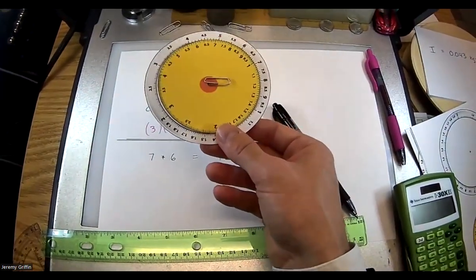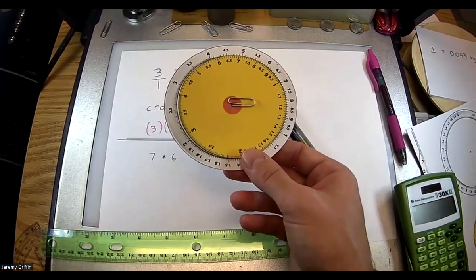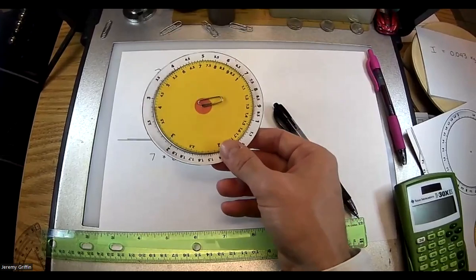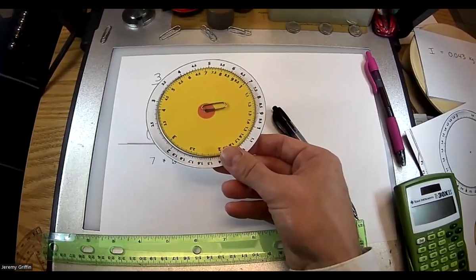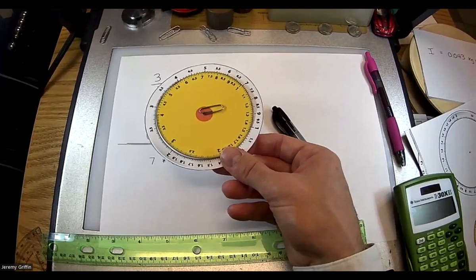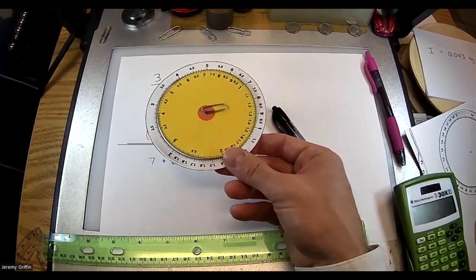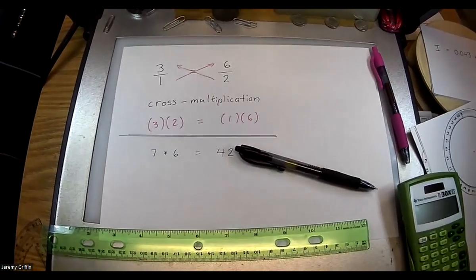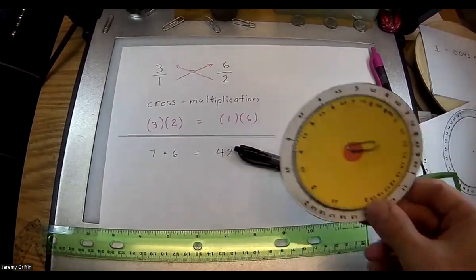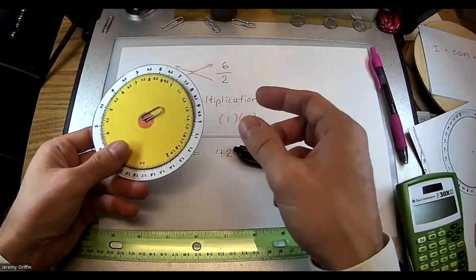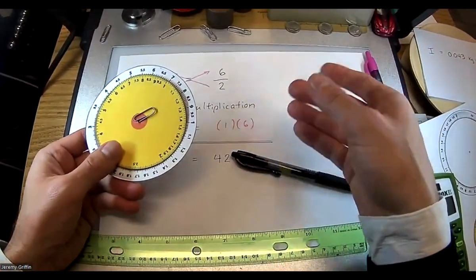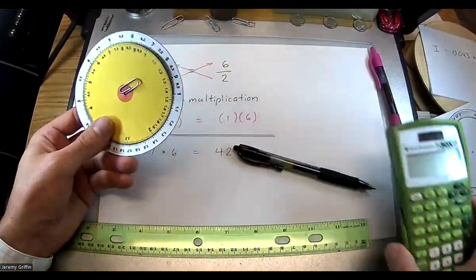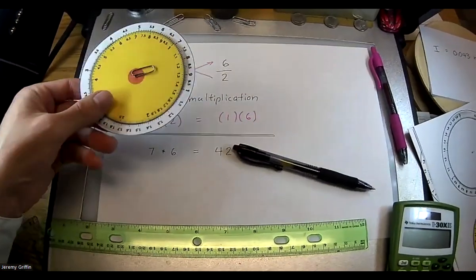Now you guys have an analog calculator that can multiply, divide, and take roots. There are a couple of limitations: one is that you have to float the decimal place and keep track of a reasonable order of magnitude in your mind. The other limitation is you only get about two or three digits of precision. If you need four digits of precision, you have to pick up a digital calculator.